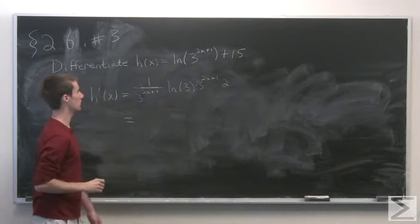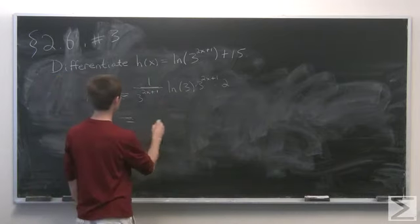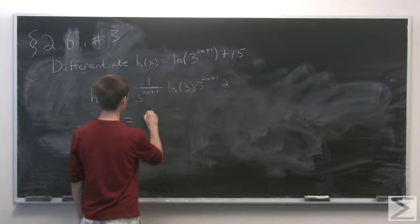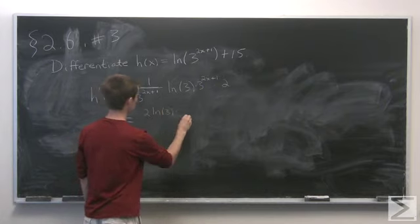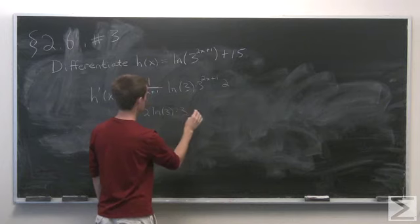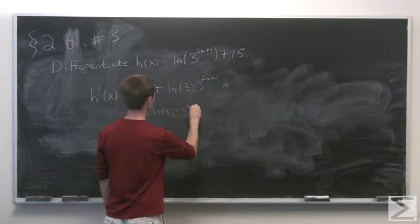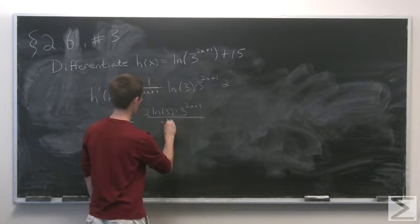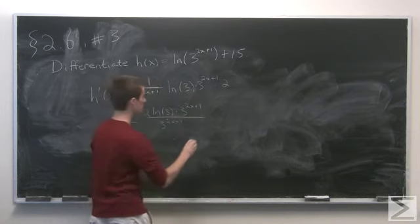So this whole thing ends up becoming 2 natural log of 3 times 3 to the 2x plus 1 over 3 to the 2x plus 1.